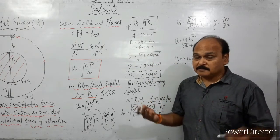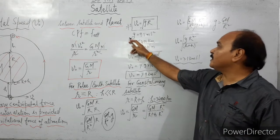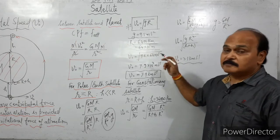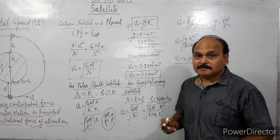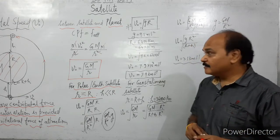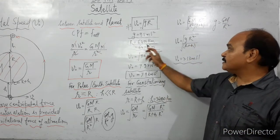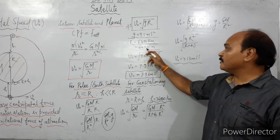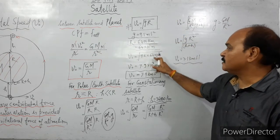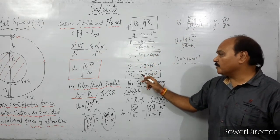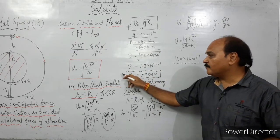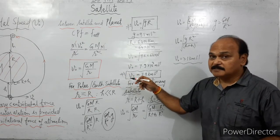For our Earth, g is 9.8 m/s² and the radius of Earth is 6400 km, or 64 × 10⁵ meters. If we substitute these values — √(9.8 × 64 × 10⁵) — it comes out to be 7.9 km/s. So this is the orbital speed of Earth satellites, that is, polar satellites.